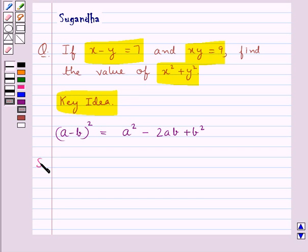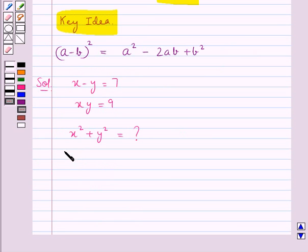Now let's move on to the solution. We are given x minus y as 7, xy as 9, and we need to find the value for x square plus y square.